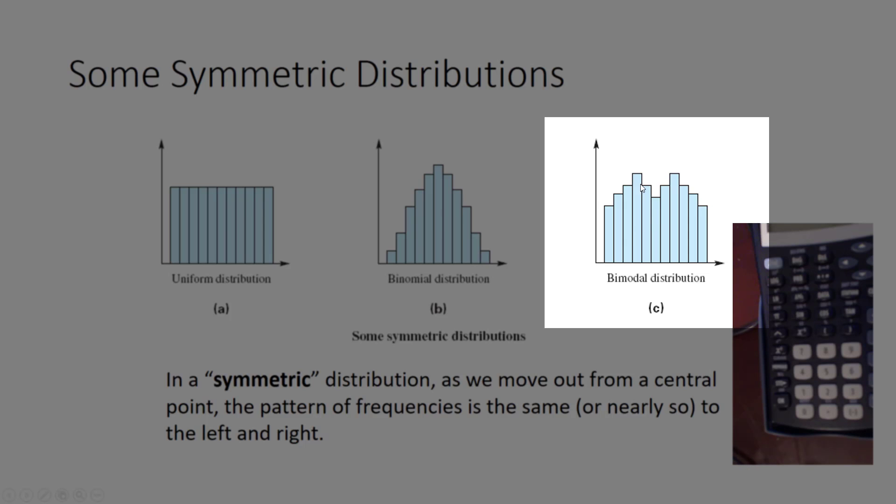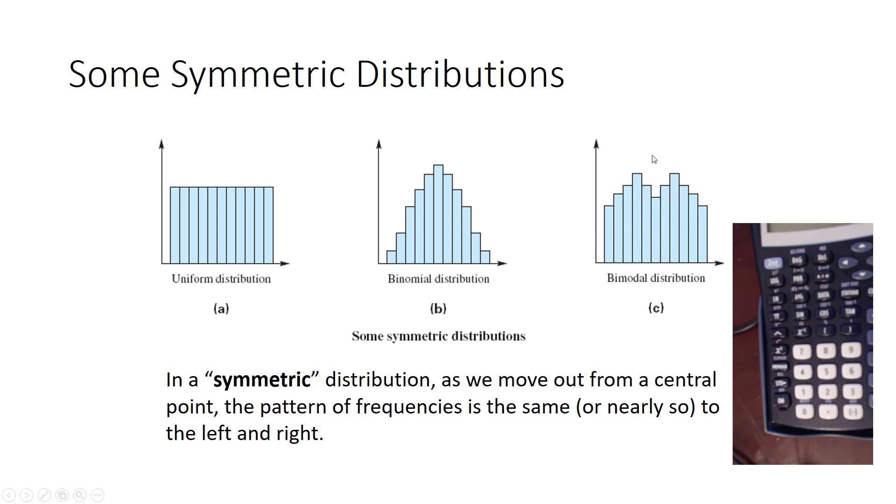And then here we have an example of a bimodal distribution where two of the data values are occurring the same amount of times, and that happens to be the most, so those are the modes. But we still see symmetry in the set even though the data value occurring the most isn't in the middle like it was in a binomial distribution.